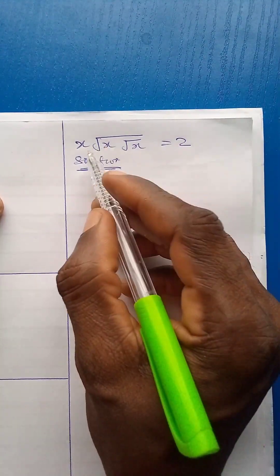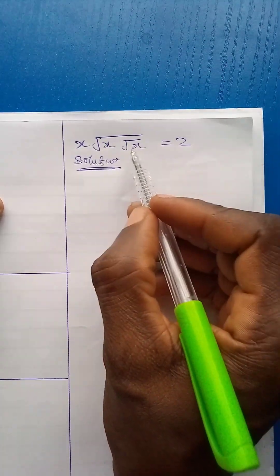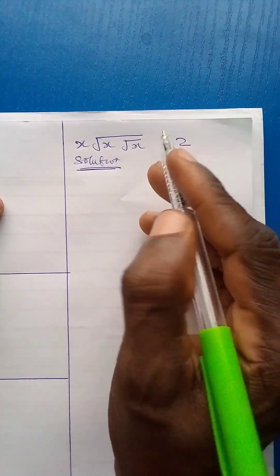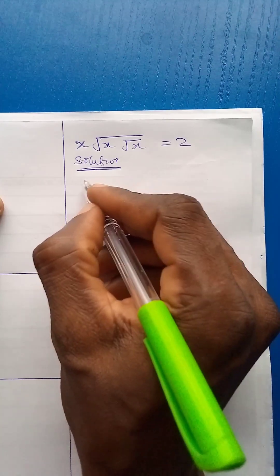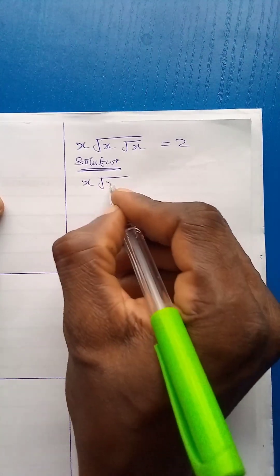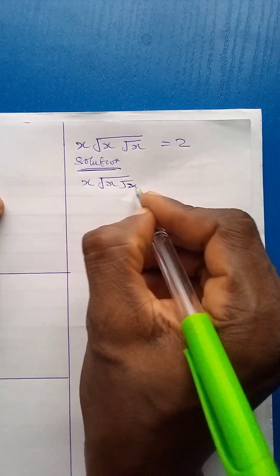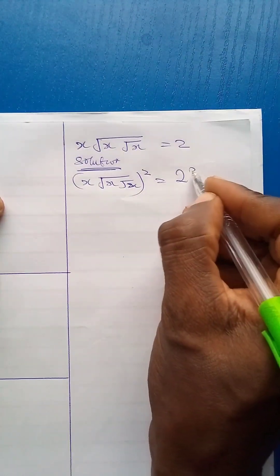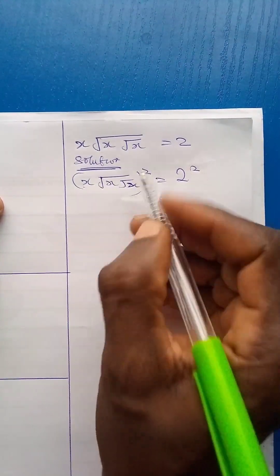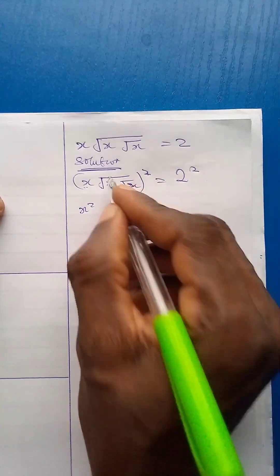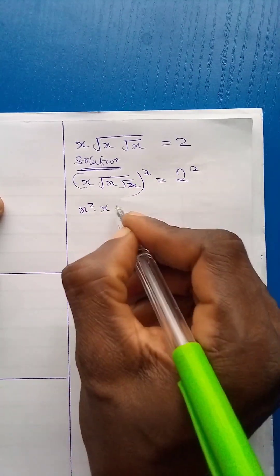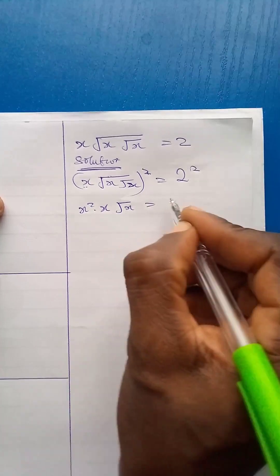Now to solve it, I'm going to square both sides continuously until the square root signs disappear. So in the first case, I'll square both sides of the equation. If I square both sides, here will be squared and then 2 raised to power 2. Now, x squared and then this will cancel this one. So I have x, then square root x is equal to 4.